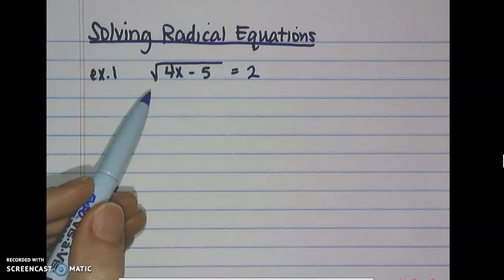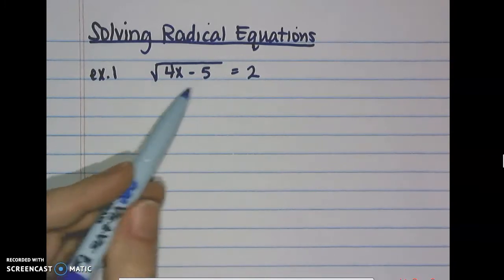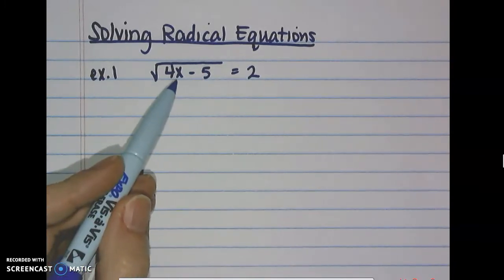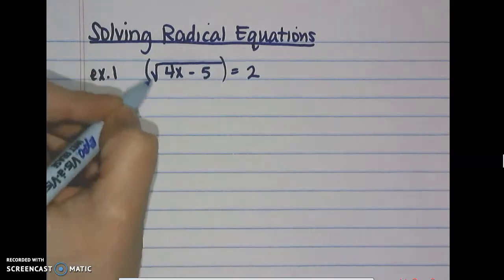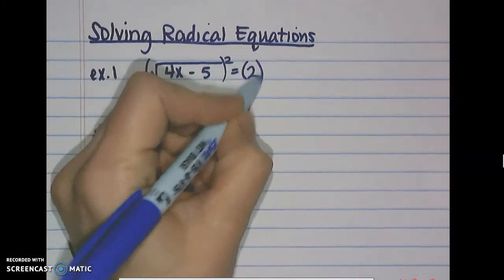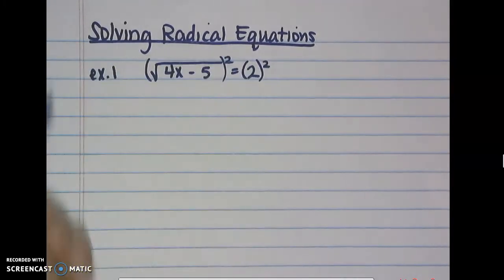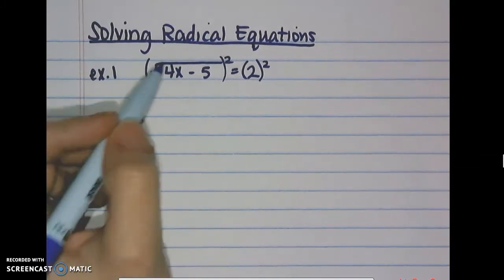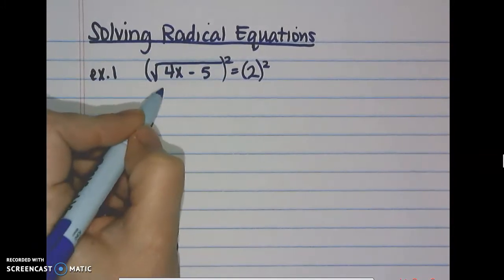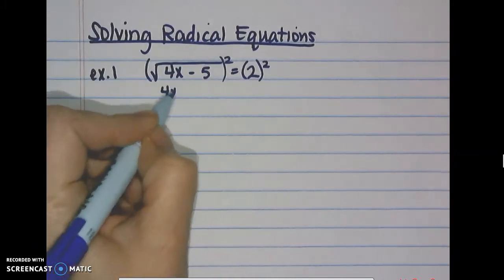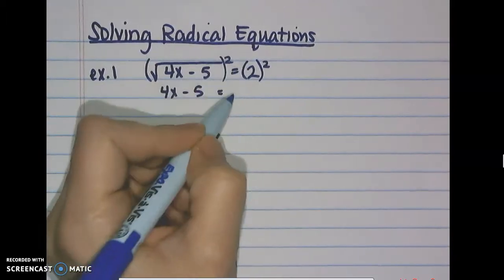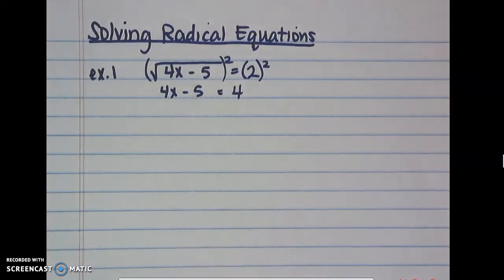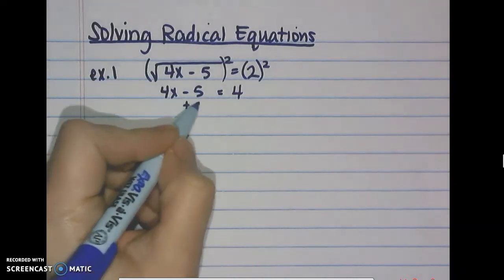To get started, we've got to get rid of this radical to get x by itself. That means we're going to square both sides in order to get rid of that radical. When we do so, the square root goes away, leaving us with 4x minus 5 on the left equals 4 on the right.